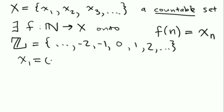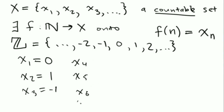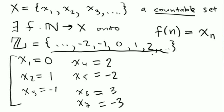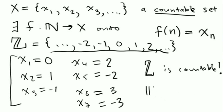I can come up with a correspondence for Z like this: x₁ = 0, x₂ = 1, x₃ = -1, and then repeating the pattern — the next two numbers are the positive and negative of the next integer not yet hit: 2, -2, 3, -3, and so on. If I keep doing this pattern, I'll hit every number in Z. So Z is countable. It turns out that any time a set is countable, it has the same size as the natural numbers.